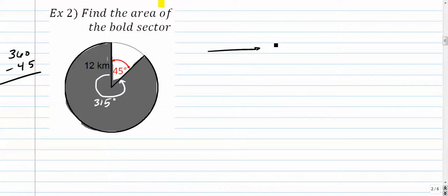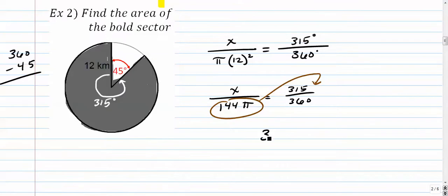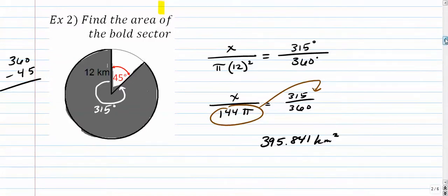So here we go. We've got a proportion we want to set up. X is our sector area, pi r squared. Our radius is 12 is equal to 315 over 360. 12 squared is 144. Again, you can simplify these if you want to, but I'm not going to. And then just take this and multiply it by the numerator. So we've got 315 times 144 pi over 360. Answer 395.841. And again, that's an area, so we want to square it.